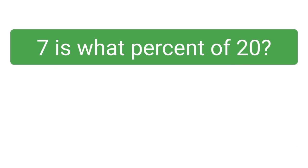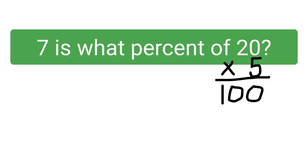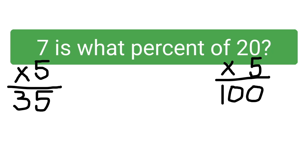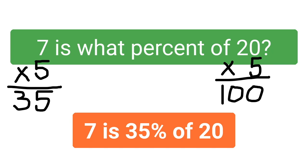7 is what percent of 20? We can easily make 20 into 100 by multiplying it by 5, and we need to do the same to the 7. 7 times 5 is 35. So 7 is 35 percent of 20.